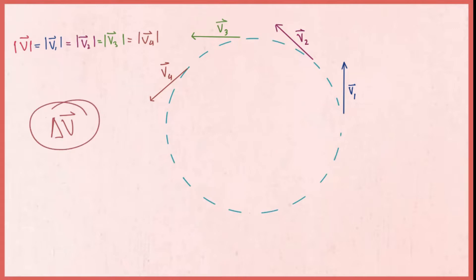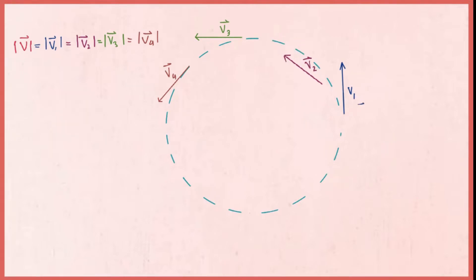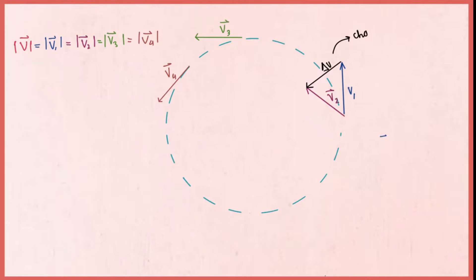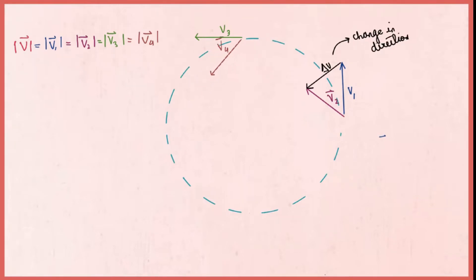Let's find the direction of delta v. Using the graphical method, trace v2 to the tail of v1, then the delta v vector would give us change in velocity, which is a mere change in direction. The same is true for velocity vectors v3 and v4. Note that the change in velocity delta v is directed towards the center of the circle.